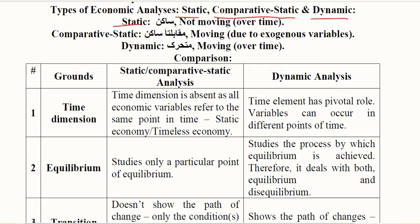Static analysis, as the name goes, is something that doesn't move over time. Comparative static is something that is static but comparatively — it is moving, but it moves due to exogenous variables and not due to time. Dynamic analysis is something that changes over time, which is dependent upon time.